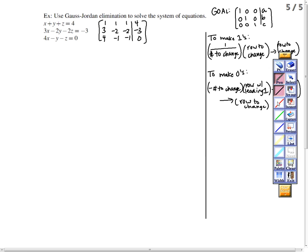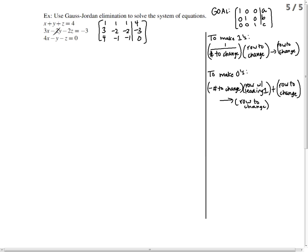You always want to make sure all of your variables are in order. x, y, z, x, y, z, x, y, z, because this is the x column, the y column, the z column, and this is your constants column.